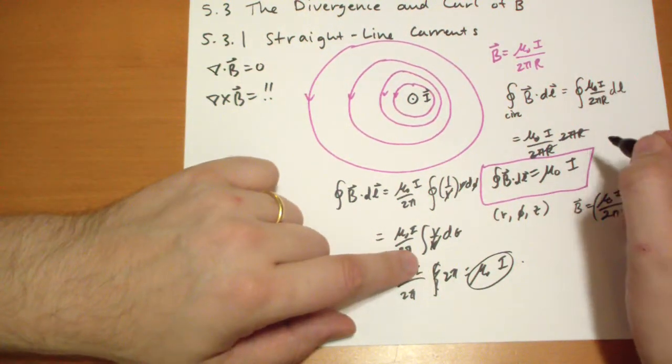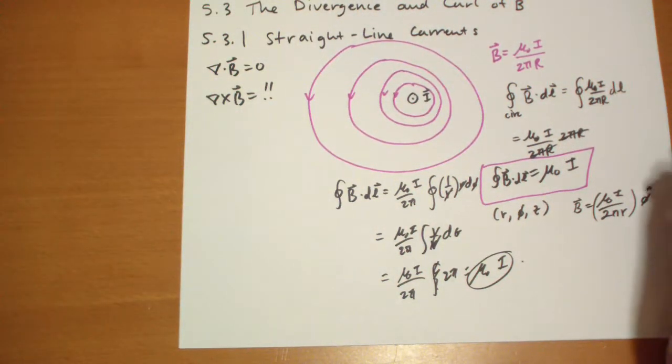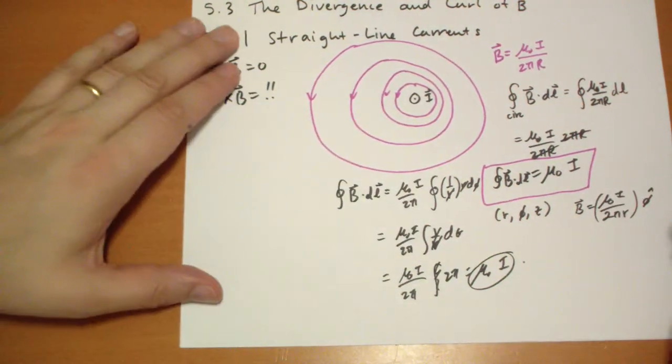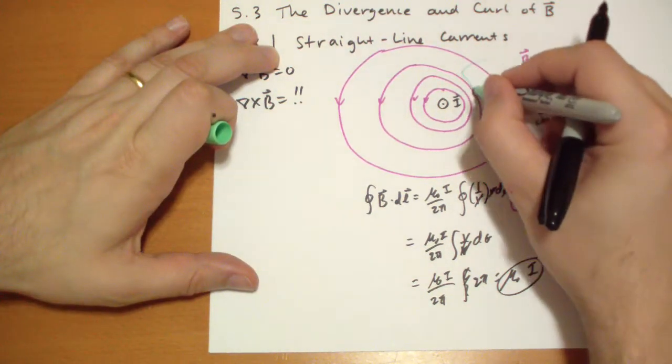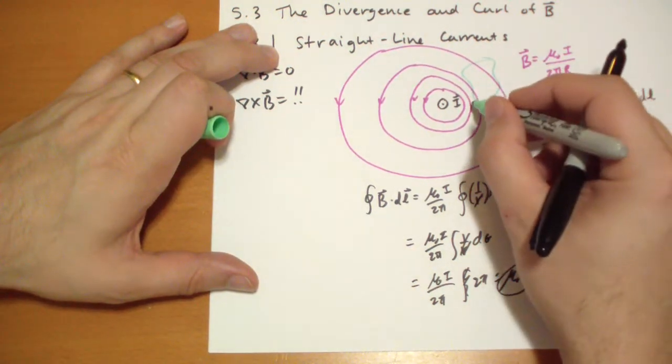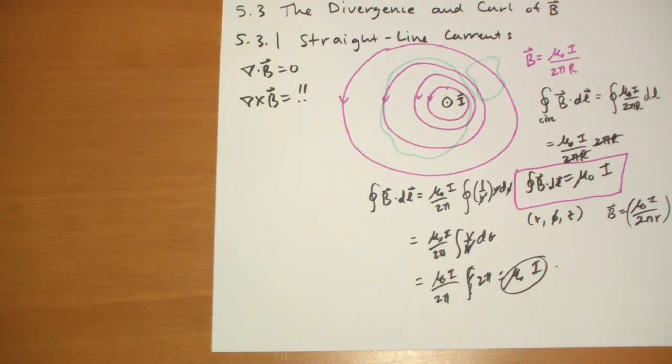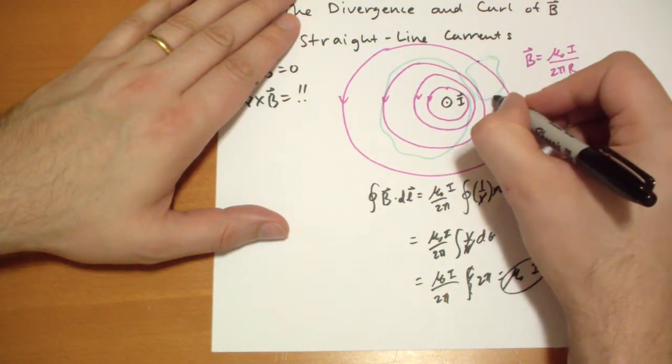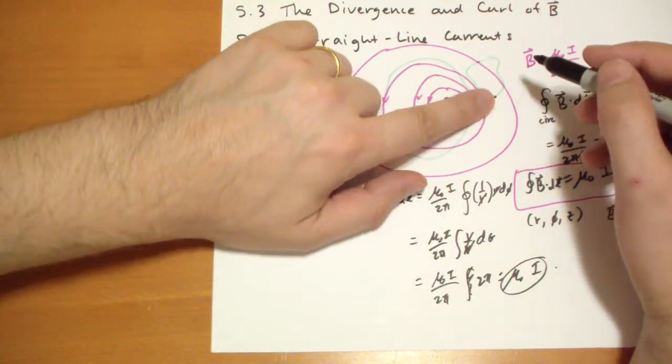Only when your φ starts here, goes all the way around, and comes back. So if you loop around the origin, you're going to get the answer of μ₀I. But what happens if you don't loop around the origin? So let's say you take a funny loop like this. So we already calculated what happens if you go around and include the origin. You get μ₀I.